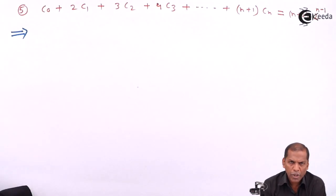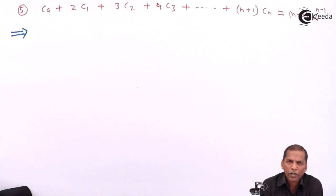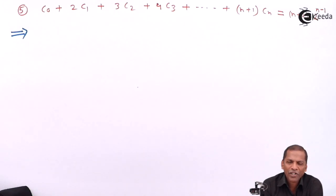Hello friends, now we see problem number 5, which is also based on binomial coefficients and Result 1 and Result 2 of the chapter Method of Induction and Binomial Distribution.